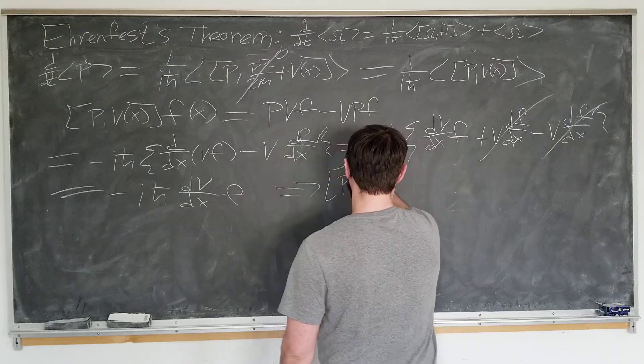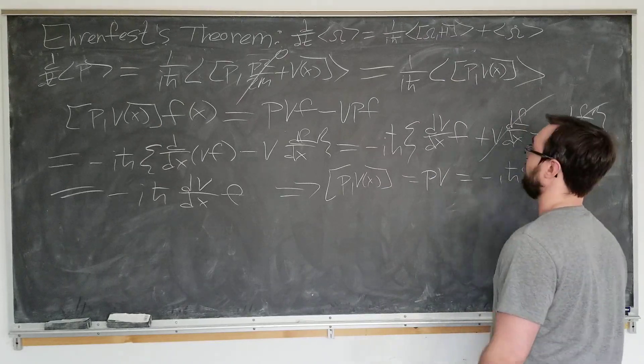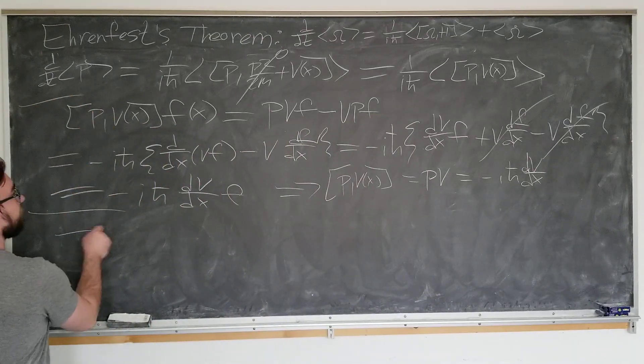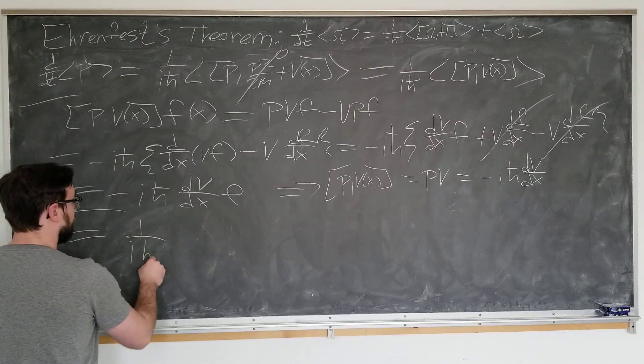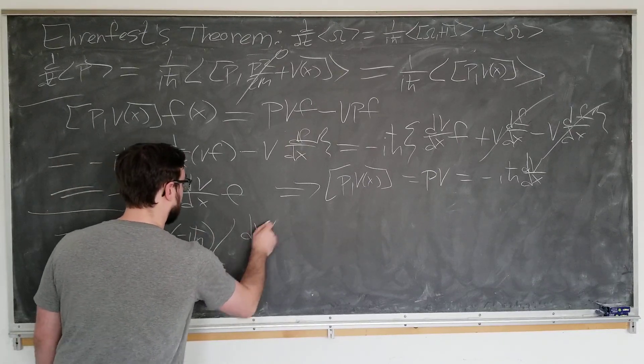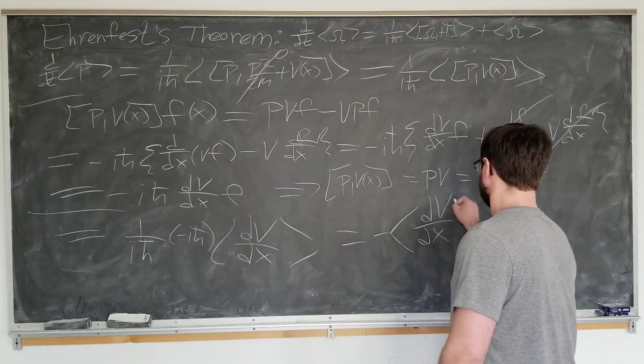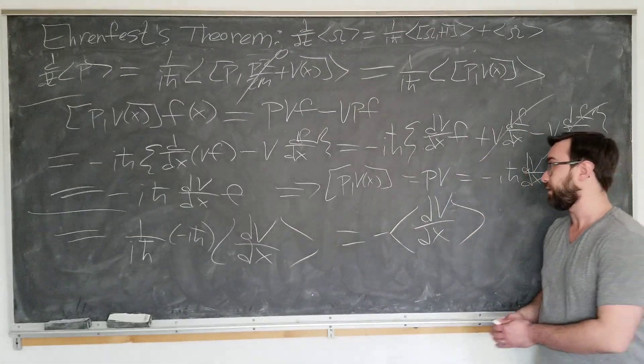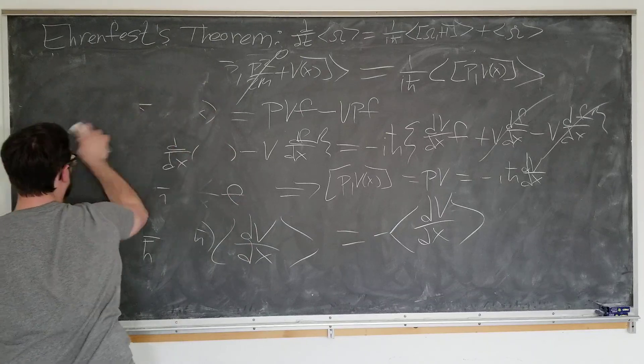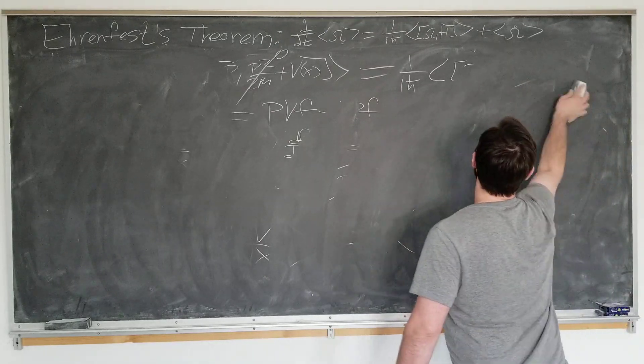We get p with v equals minus i h bar dv by dx. Great, almost done here, go back to our main result. This is now going to be equal to 1 over i h bar minus i h bar dv by dx, which is simply minus dv by dx in brackets. Which should look similar to Newton's second law, f equals ma, our p dot is minus the gradient of v, the potential.